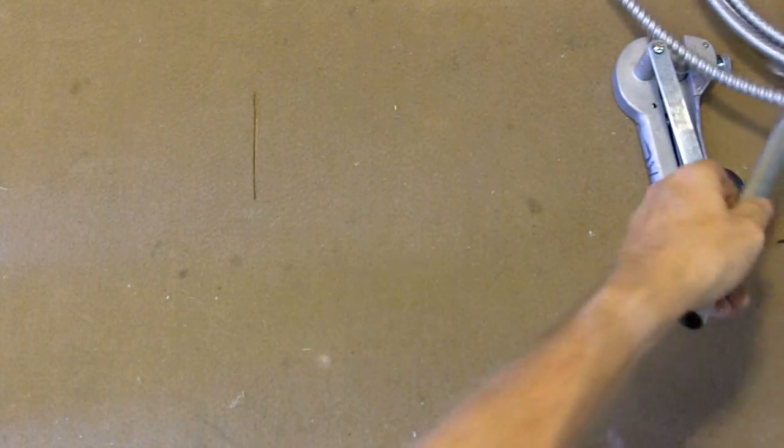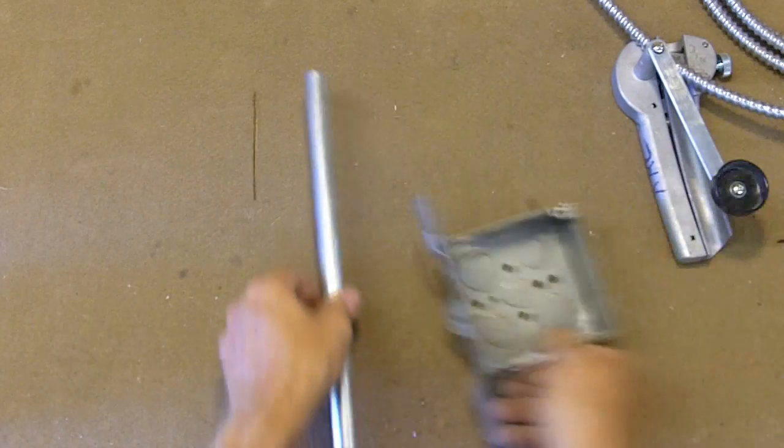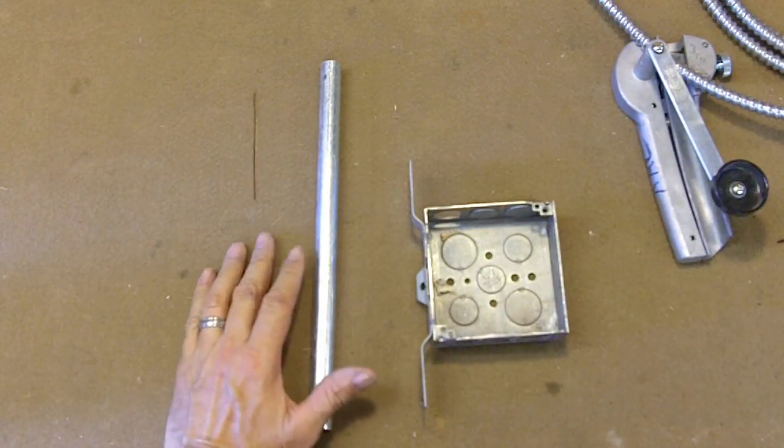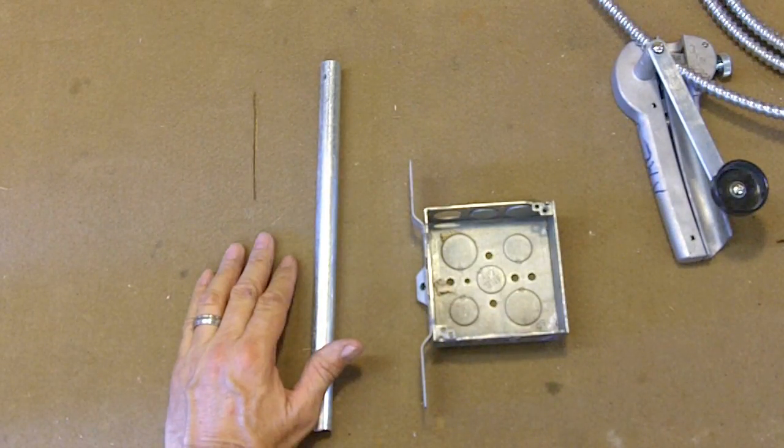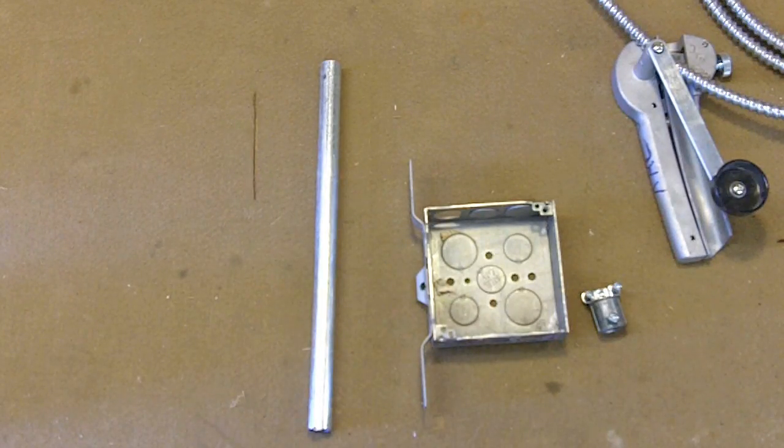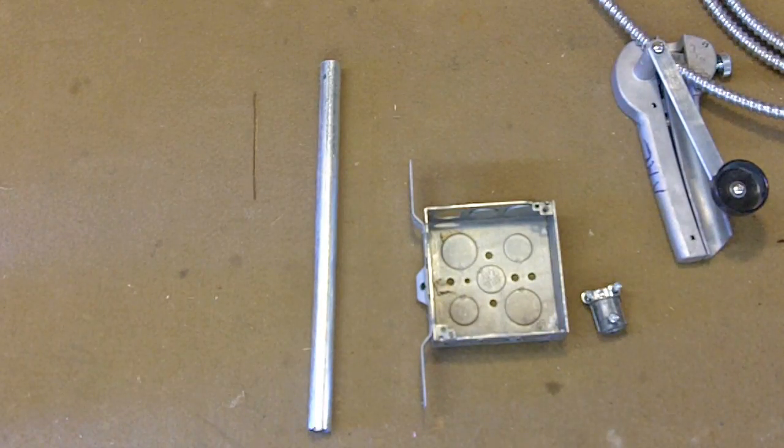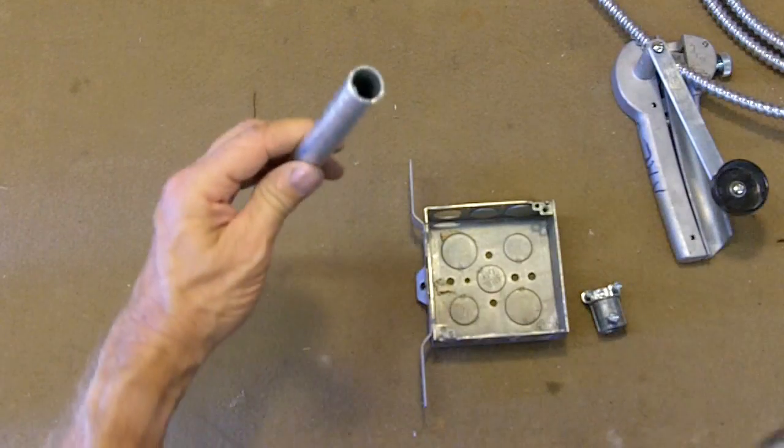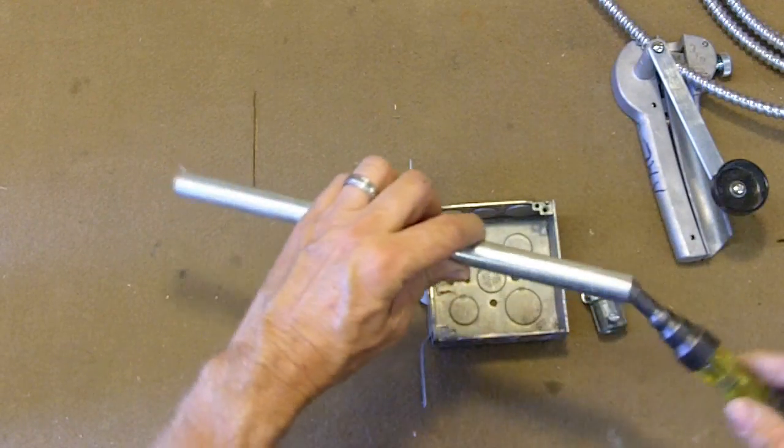So what I'll do is I'll start off by assembling the box EMT connectors and the EMT to MC connector. This piece I just cut off with my hacksaw.